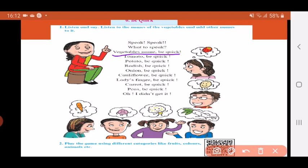So which are the vegetables that you have learned today? Let's take a look. Tomato, potato, radish, onion, cauliflower, lady's finger, carrot and peas. So these were the names of vegetables that we have learned today.